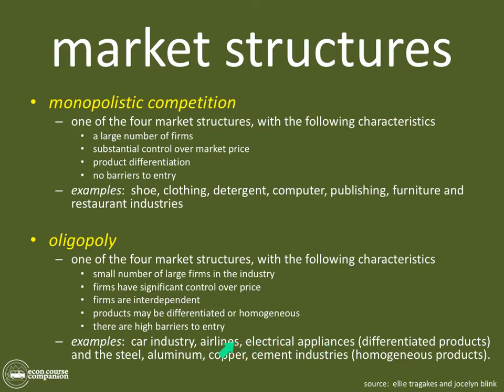Other examples of oligopoly include airlines, electrical appliance manufacturers, and the steel, aluminum, copper, and cement industries. CEMEX is a great example — a huge company that practically owns the cement market in Mexico and Central America. These are the four market structures — perfect competition, monopoly, monopolistic competition, and oligopoly — and you will use them to analyze how firms behave using the production, costs, revenues, and profits model.